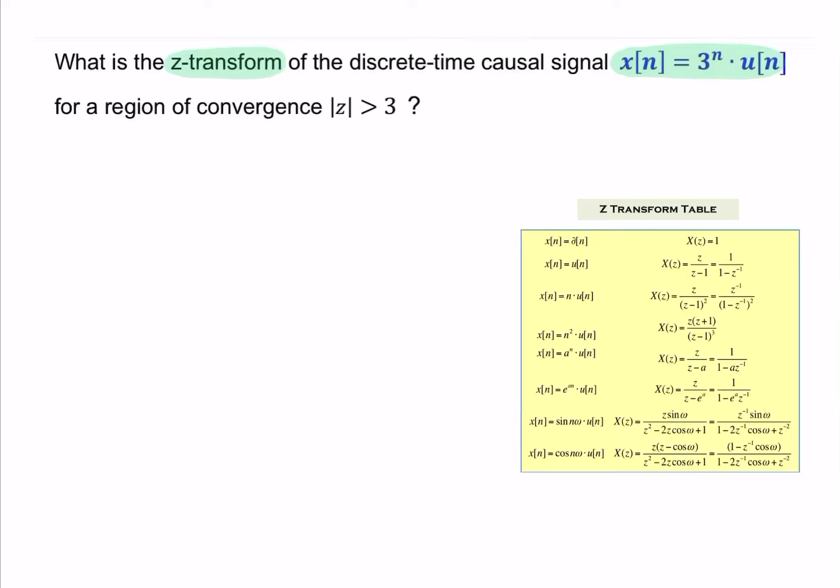So we can simply apply the definition. x of z, the one-sided z-transform, is a summation from 0 to infinity of x of n times z to the power minus n. And we simply replace x of n with the expression given.